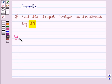We have to find the largest 4-digit number which is exactly divisible by 24. First, let's identify the largest 4-digit number, which is 9999.